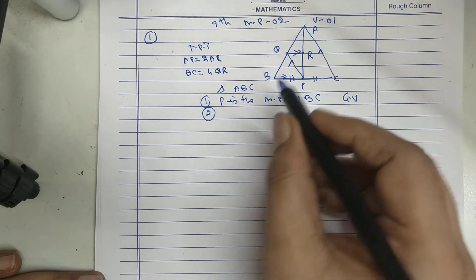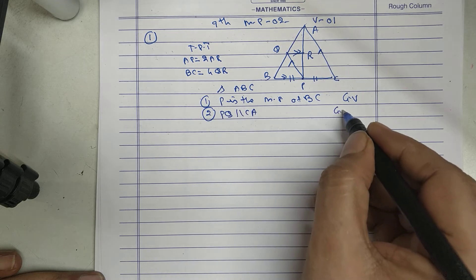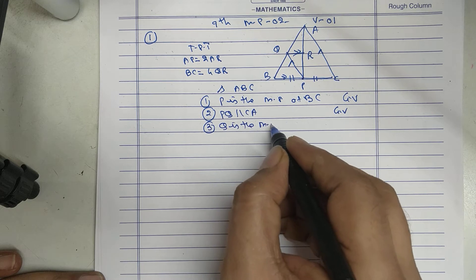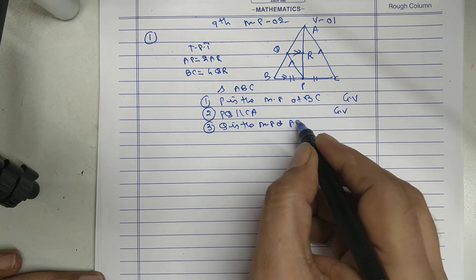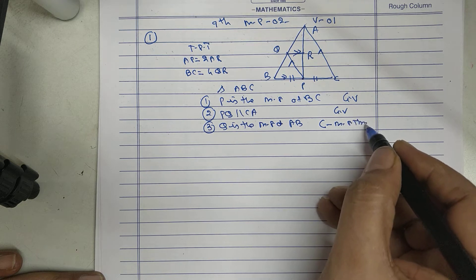PQ parallel to CA, given. Therefore, Q is the midpoint of AB. Converse of Midpoint Theorem.